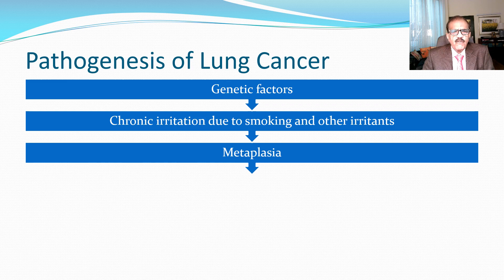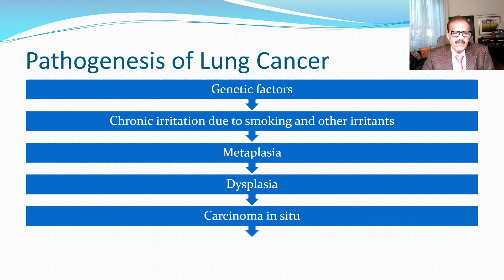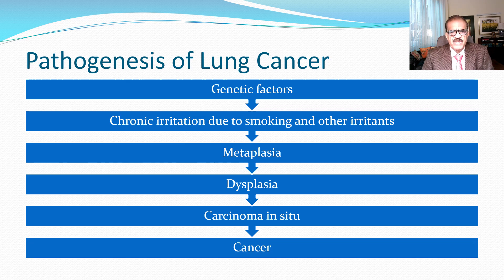Because of chronic irritation — smoke is an irritant because there are at least 300 chemicals in it — those chemicals and smoke particles cause irritation. As a result of irritation, there is metaplasia, and metaplasia leads to dysplasia, which is a pre-malignant condition that leads to carcinoma in situ. There is malignancy, but just restricted to one part — it hasn't spread anywhere yet.